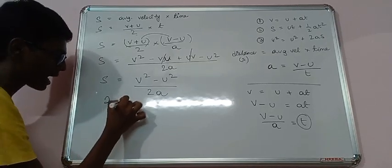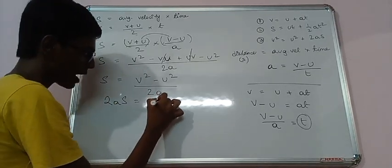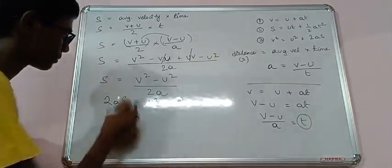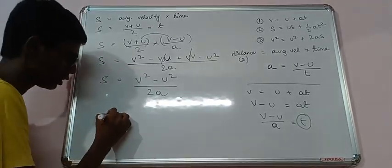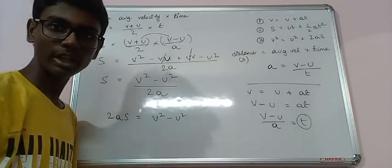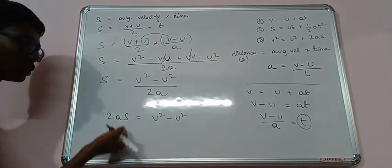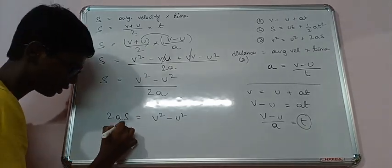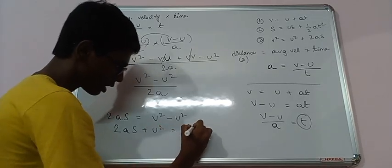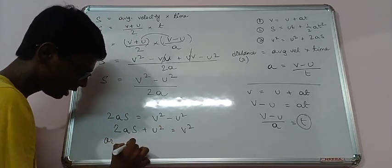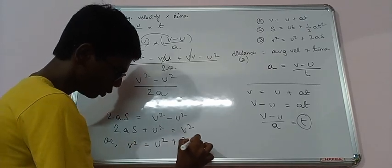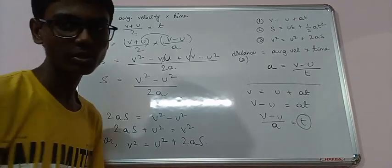We can say this, and we can shift U square to the other side. So 2AS plus U square equals to V square. Or V square equals to U square plus 2AS. Our third formula is also derived.